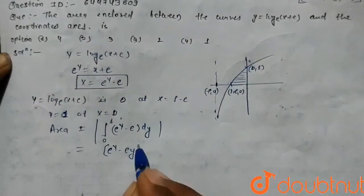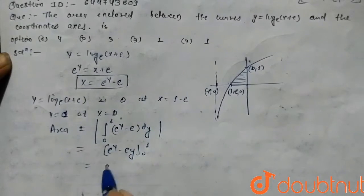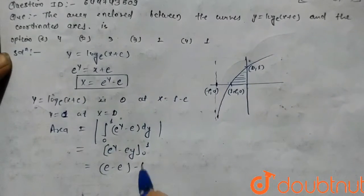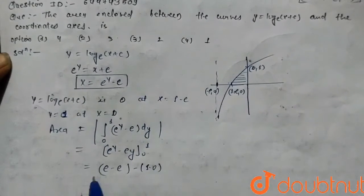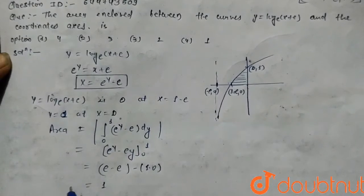from zero to one, which is (e - e) minus (1 - 0) equals 1. So the final answer is 1 square unit.